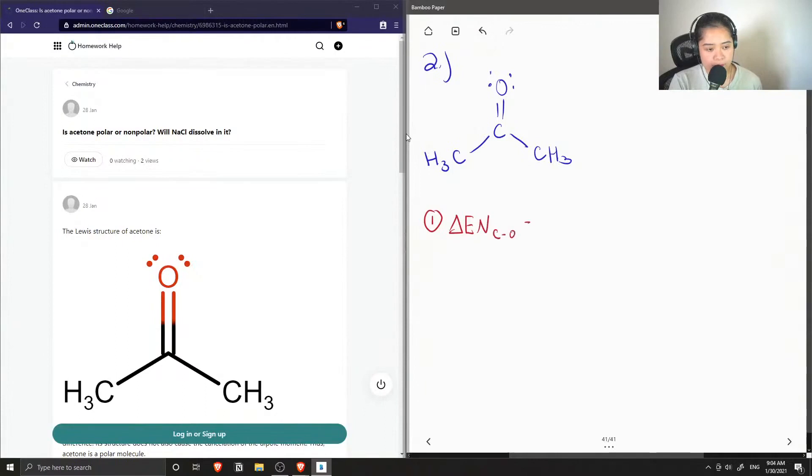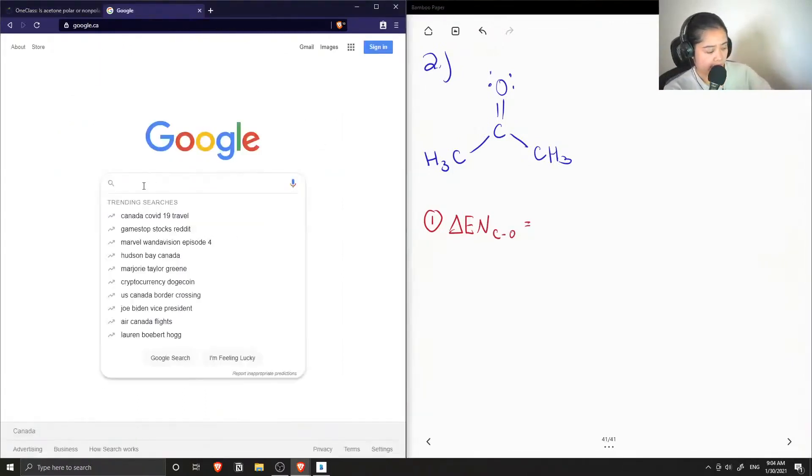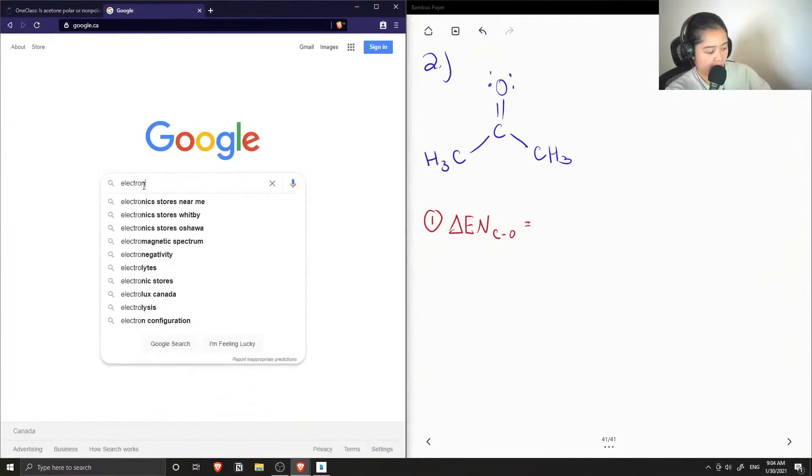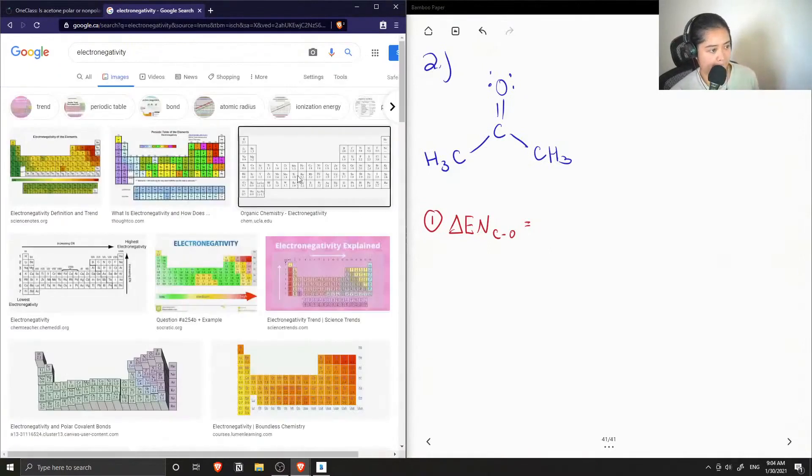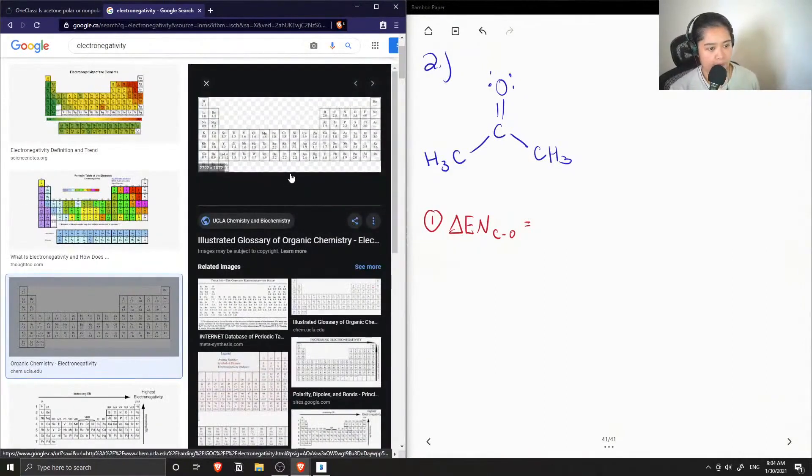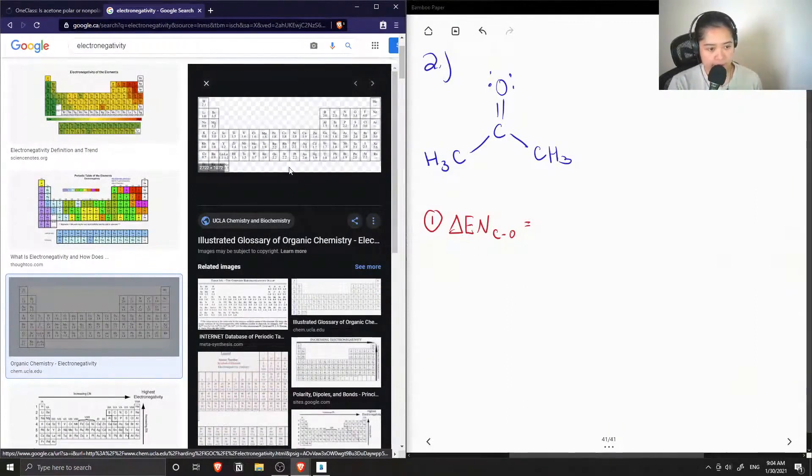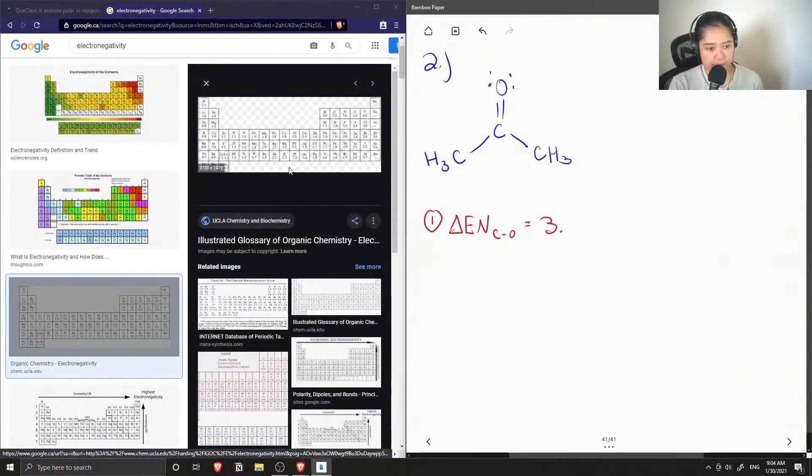First let's do carbon and oxygen and look up their electronegativity values. Oxygen has an electronegativity of 3.5, and carbon has an electronegativity of 2.5.